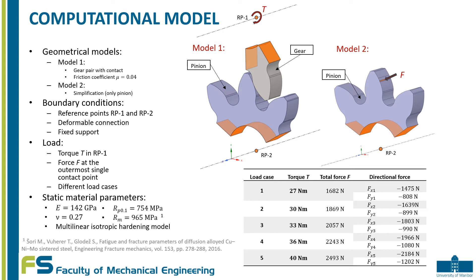Two geometrical models were made. The first geometrical model consists of a gear pair with frictional contact at the outermost single contact point, where the friction coefficient equals 0.04. The second geometrical model is a simplification of the first one, where only the pinion is used. It was designed due to limitations of the crack propagation simulation tools.